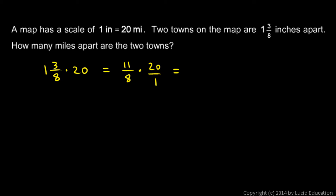And now these are a little easier to multiply. I can multiply 11 times 20 for the numerator and 8 times 1 for the denominator. But it's going to be easier to reduce this first. Look at the 8 and the 20. Those can both be divided by 4. So if I divide the 8 by 4, it becomes a 2. And then I divide the 20 by 4 also. It becomes a 5. And now this is easier to multiply. 11 times 5 is 55.